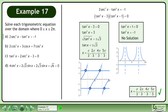Combining the solutions, we have x equals π/3, 2π/3, 4π/3, and 5π/3.